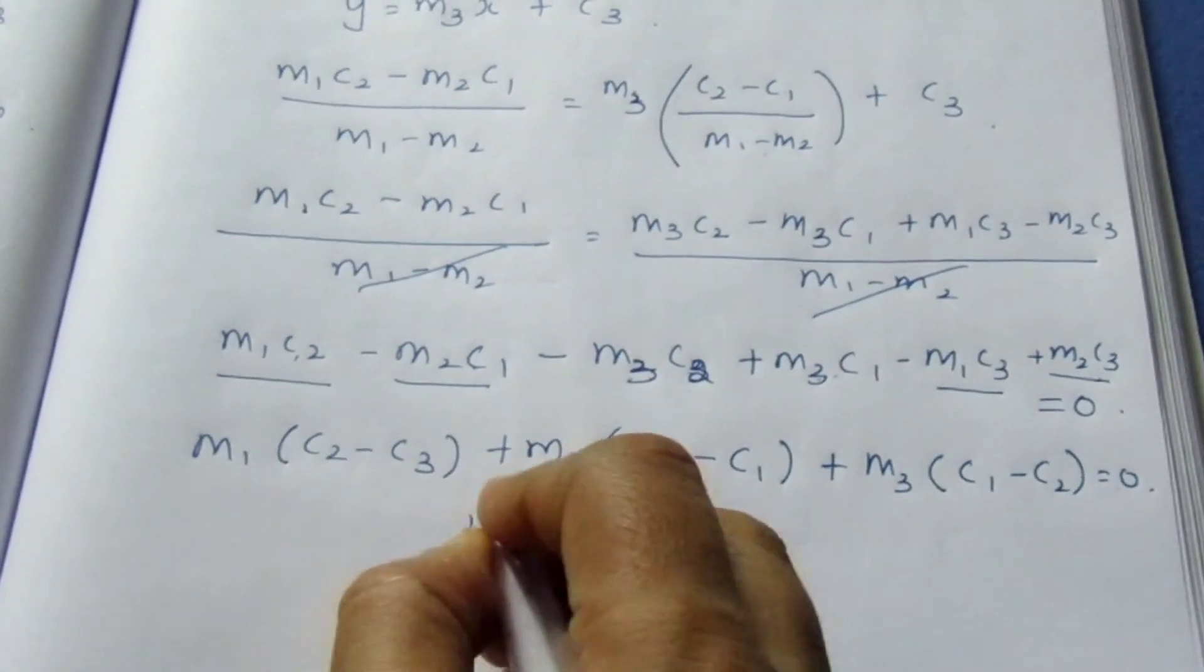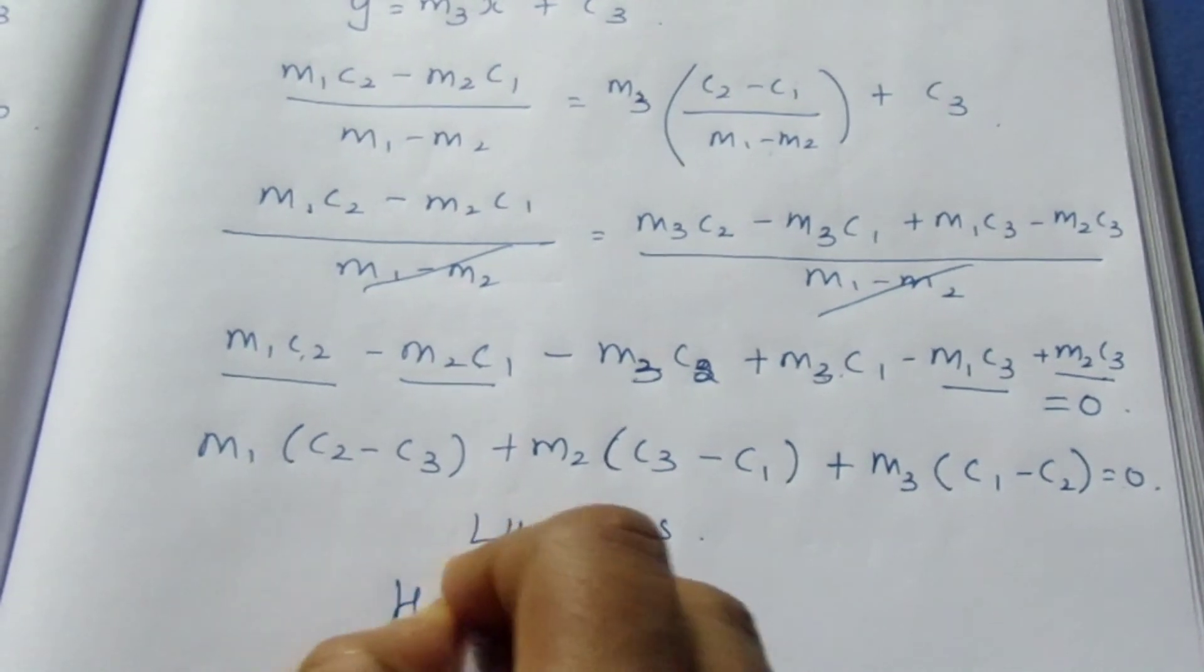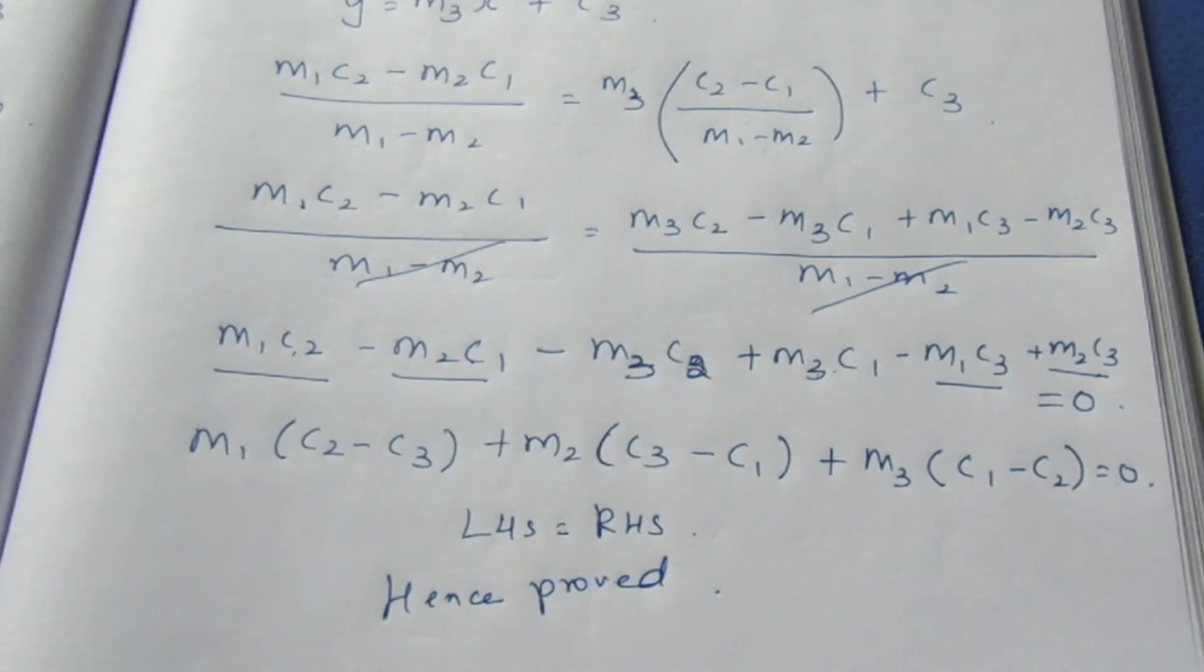So it came LHS = RHS. Hence we have proved it. That's all with the sum. Thank you.